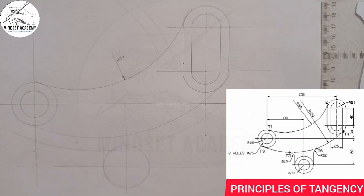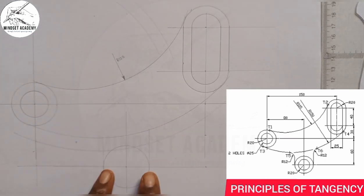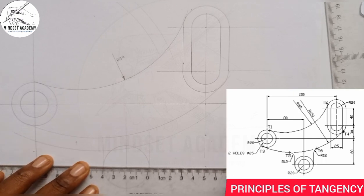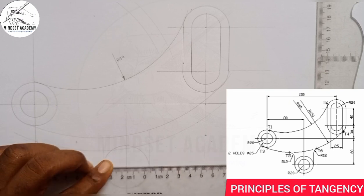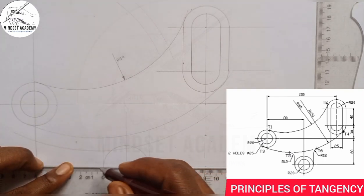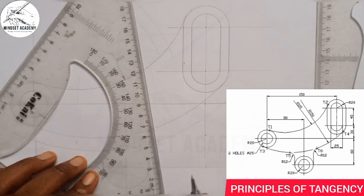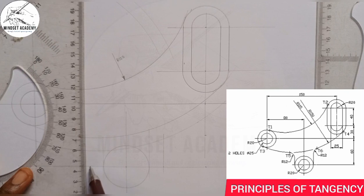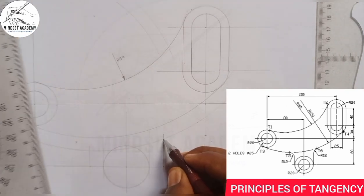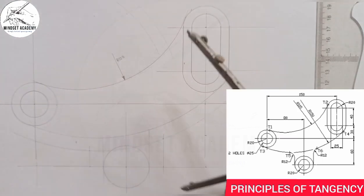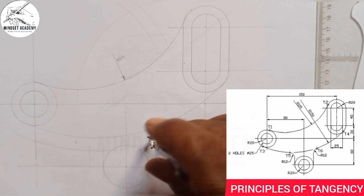Next, I'll measure a distance of 12 away from both ends, since the arc connecting them has a radius of 12. From 0 to 12 at one end, and from 0 to 12 again at the other end, I'll project those measurements upward. Where the measurements cut the arc gives me the precise tangent points I need.